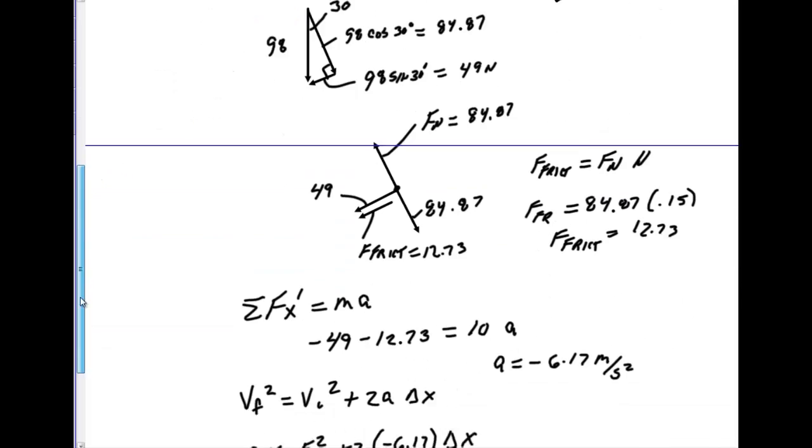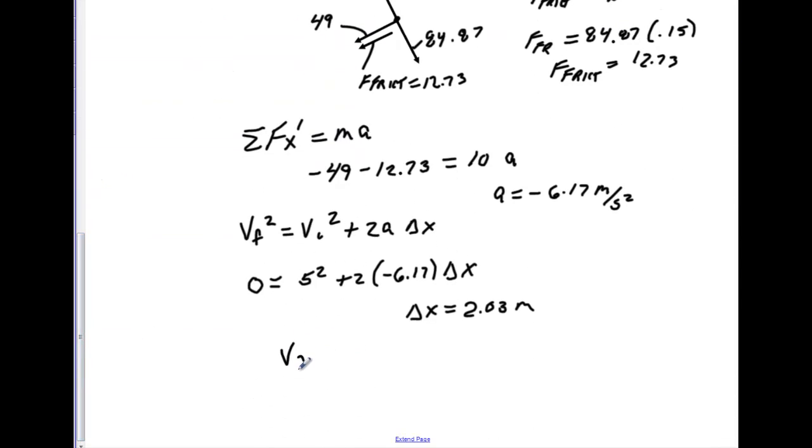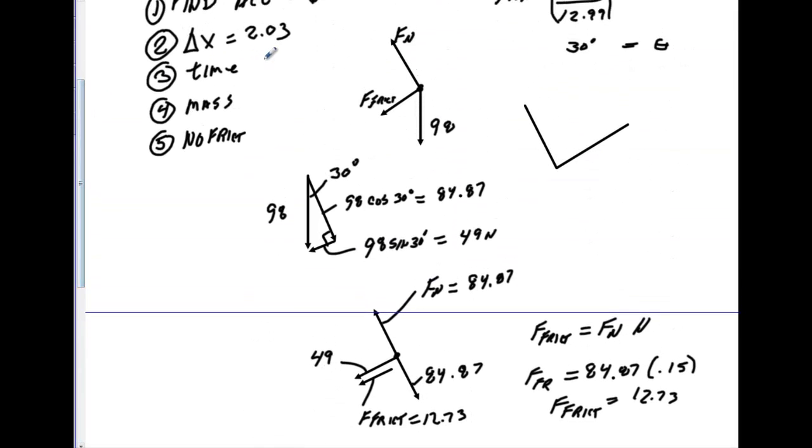Now, to find the time, just go back again to kinematic equations. VF is equal to VI plus AT. VF was 0, this is 5, plus our acceleration, that was negative 6.17. We solve for T, and I think T you'll get like 0.81 seconds.